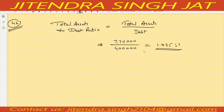This ratio shows the relationship between total assets and debt — what is the ratio between these two. Usually it depends on the nature of the company and business to business how much debt is required, but that should not be more than total assets.